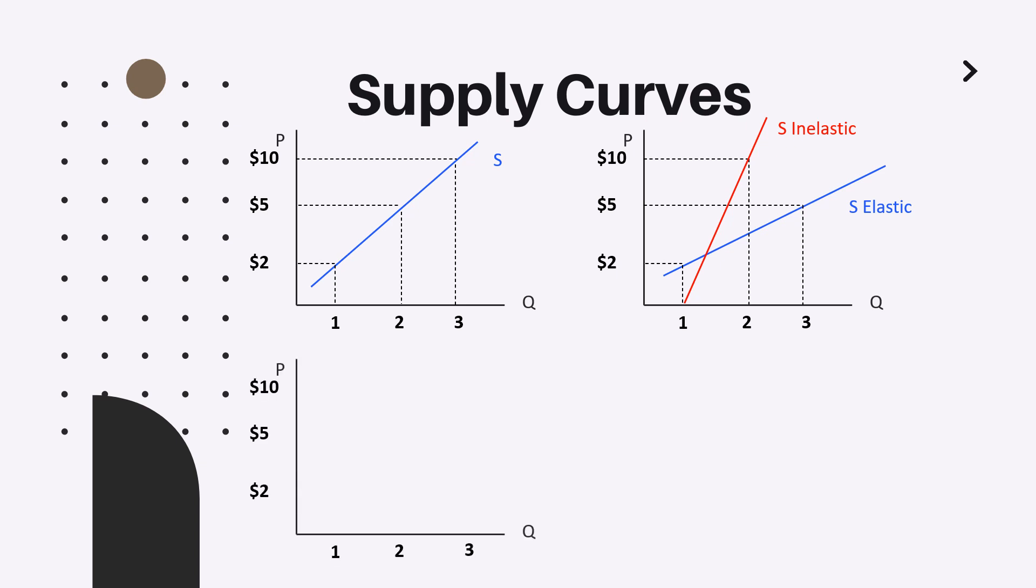And as in case of demand, we have also two rare cases. First is the graph of perfectly elastic supply, and the other is the graph of perfectly inelastic supply. Again, these are very rare cases, but you can think of real life scenarios when these are applicable models.